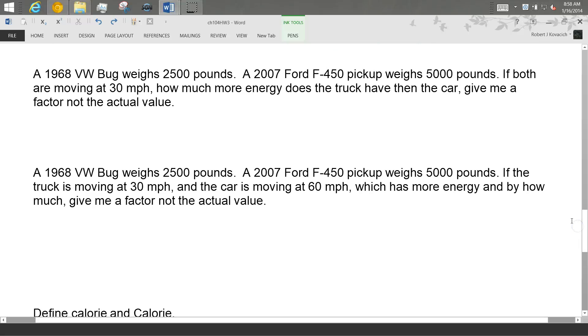So I have this VW bug. It weighs 2,500 pounds and this truck that weighs 5,000 pounds. And if they're both moving at 30 miles an hour, the equation that we have for energy of the system is the kinetic energy is one-half the mass times the velocity squared. So their speeds are the same. So that has no bearing on kinetic energy. But the truck is twice as massive. So what can you say about its kinetic energy? It's twice as much. So the truck is going to have double the amount of kinetic energy.